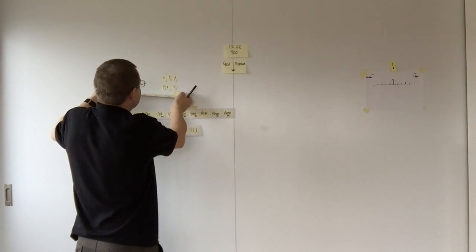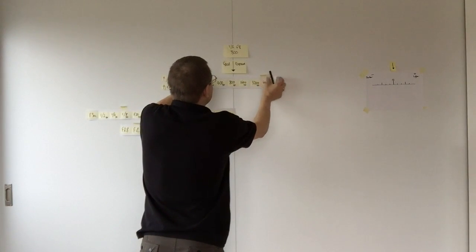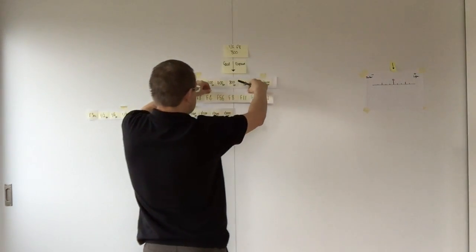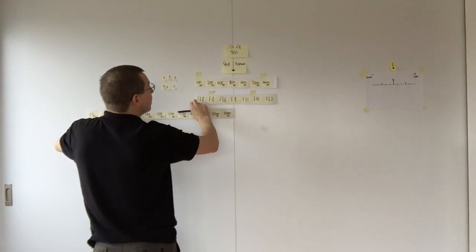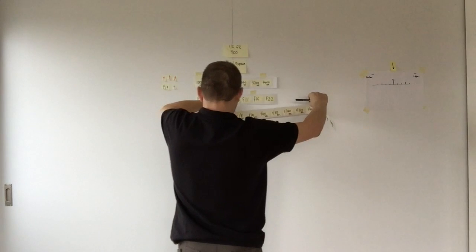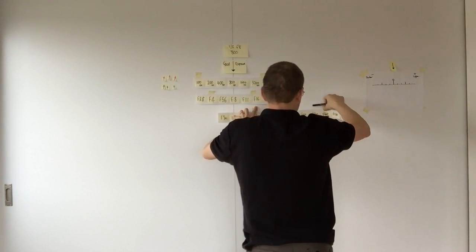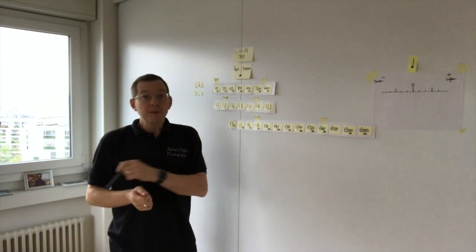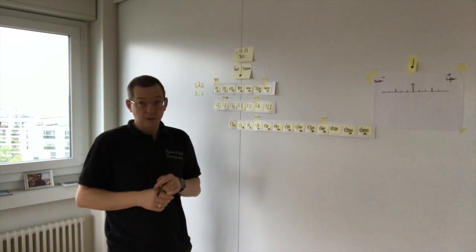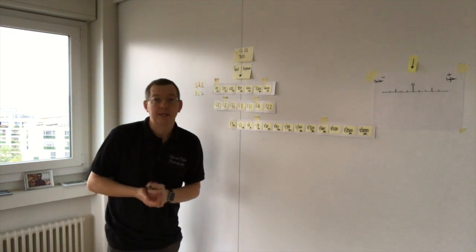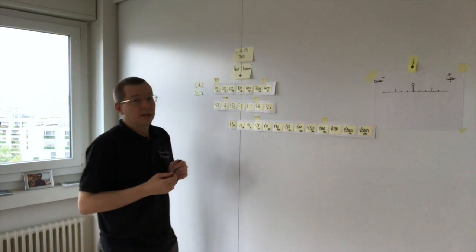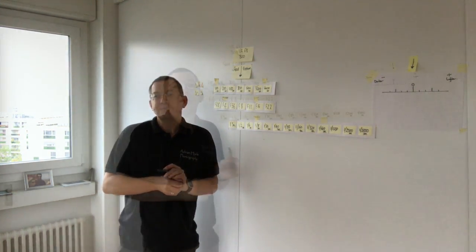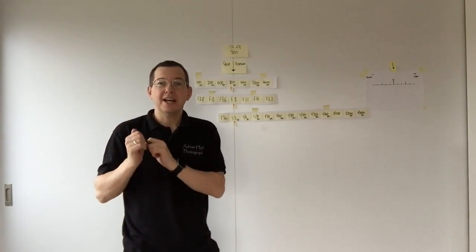So at 800 ISO, F8, and at half a second - that is our good exposure. At the moment the water is very blurred and if it wasn't on a tripod we'd probably have a lot of camera shake. What we want to do is use the shutter speed to make it quicker - I want to try and make it really, really fast. So we want to make this shutter speed as quick as we can.